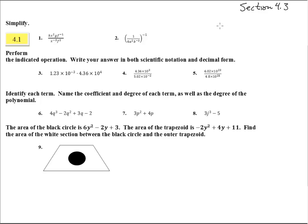Here we are in section 4.3 with numbers 1 through 9. In 1 and 2, we're supposed to simplify. Let's use our rules of exponents and see if we can get these together.